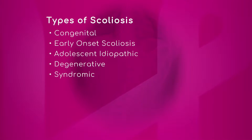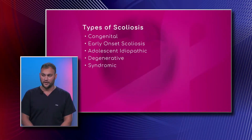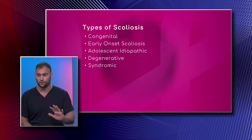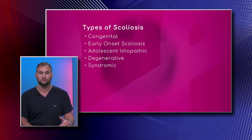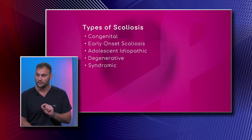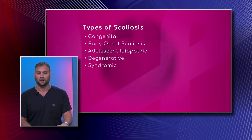Congenital scoliosis is a very scary problem when a kid is born with a curve. It's important to find out why, because there should be no degeneration at birth. Things like neurofibromatosis or congenital fusion of vertebrae — where vertebrae are stuck together — need to be ruled out, because if that is the case, the curve will progress rapidly. I would definitely address this with a pediatrician.